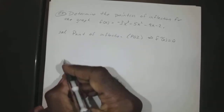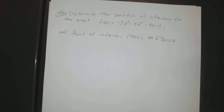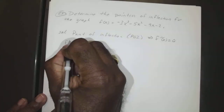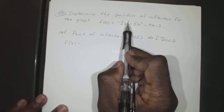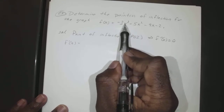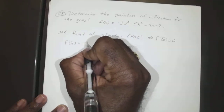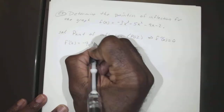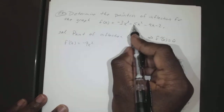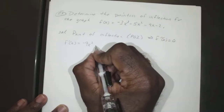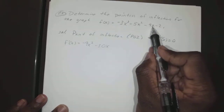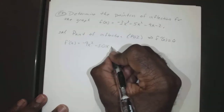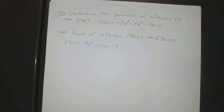So really we just have to first find our second derivative. So your first derivative: bring down our 3, so that gives us negative 9x squared. Bring down our 2 here, minus 10x, and that 9x becomes 9. So that's our first derivative.